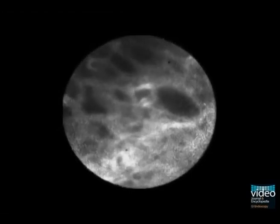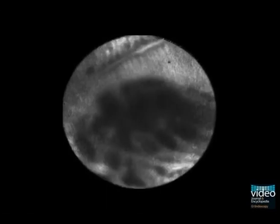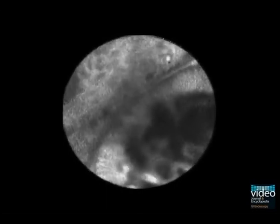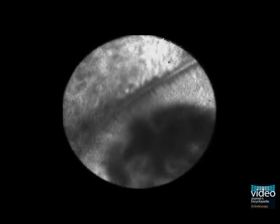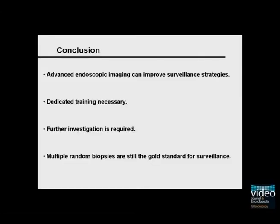Endomicroscopy also has the capability to differentiate between an ALM and a DALM lesion in vivo during ongoing endoscopy. In conclusion, advanced endoscopic imaging has the potential to improve early detection of dysplastic lesions in ulcerative colitis. Careful attention should be paid to highly dedicated training in order to use these techniques successfully. Nevertheless, the assessment of these new endoscopic imaging modalities in clinical practice still requires further investigation. Therefore, endoscopy with multiple random biopsies remains the gold standard for surveillance in patients with ulcerative colitis.